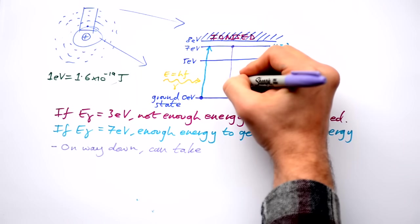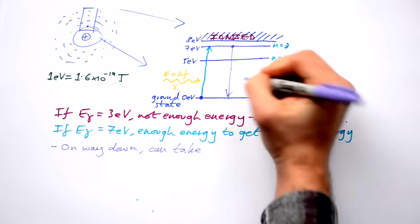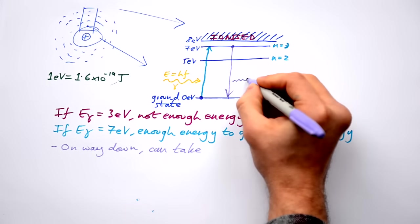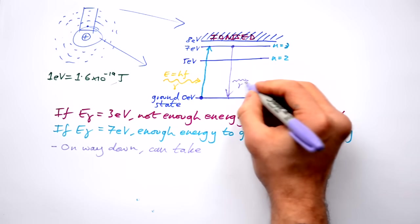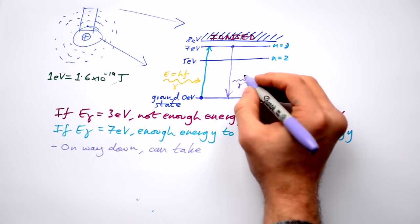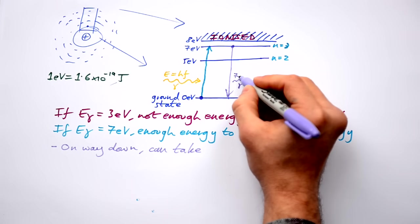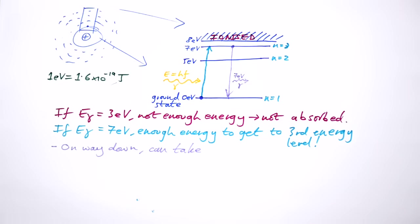Either it can go straight back down to here and it can release a photon because it has to get rid of energy. And that's going to be a photon that has seven electron volts of energy, if that makes sense. But it has another option as well.